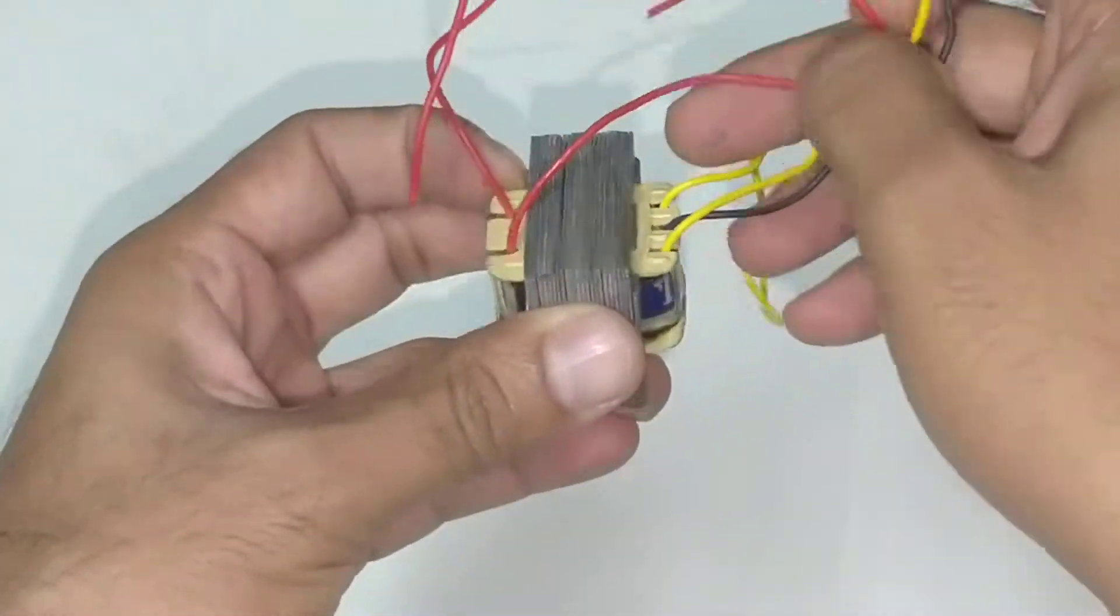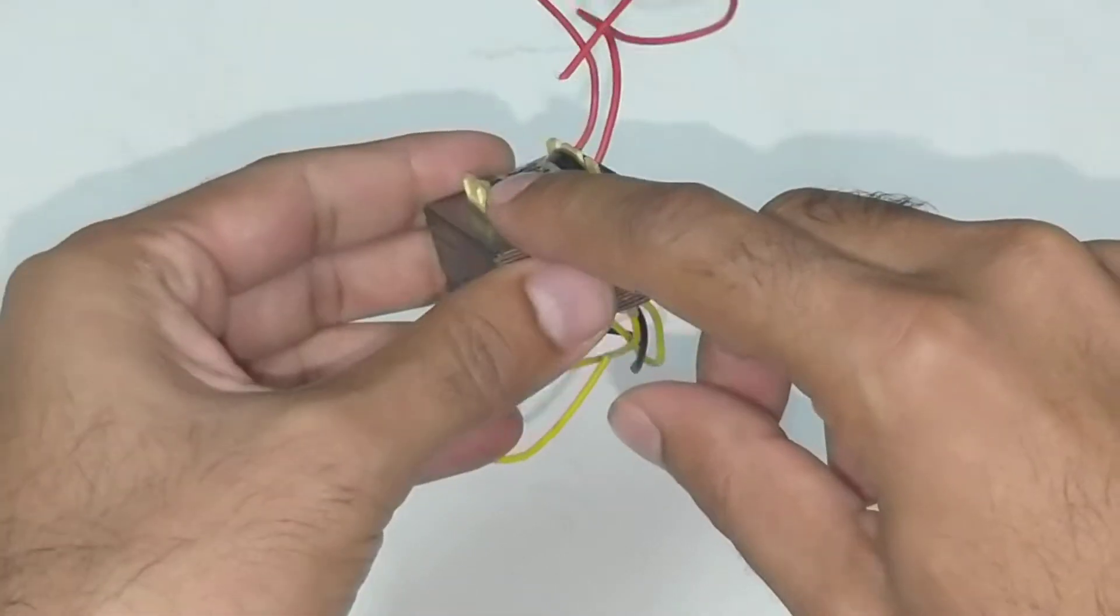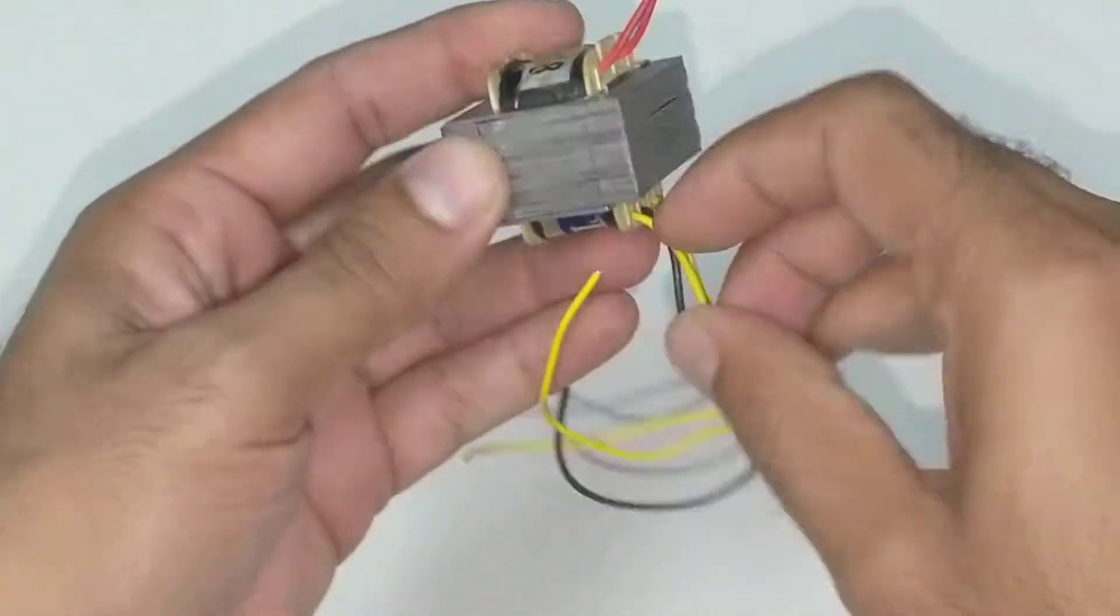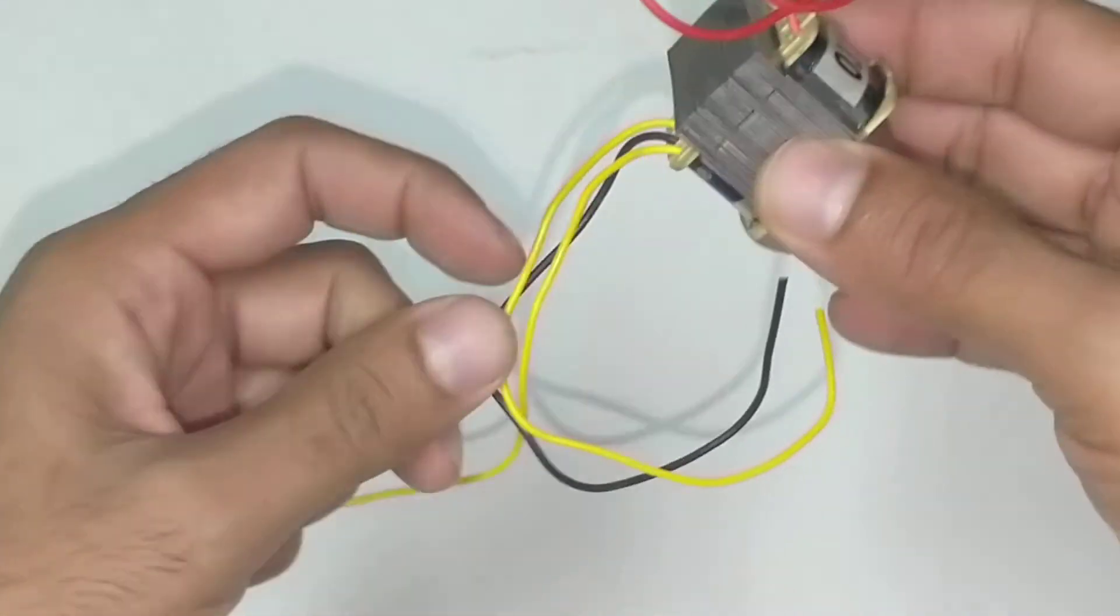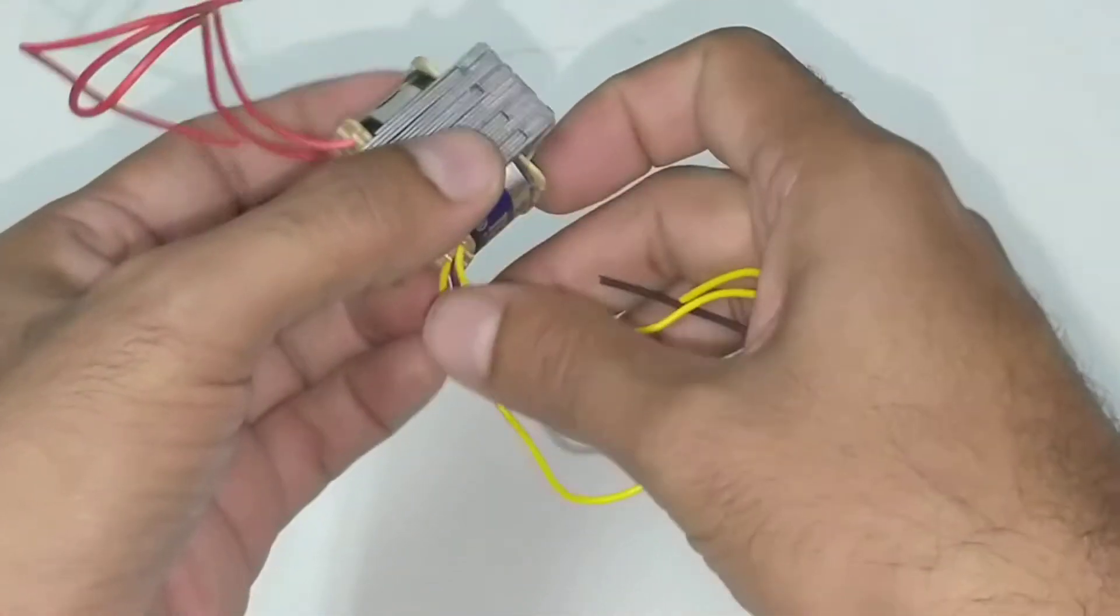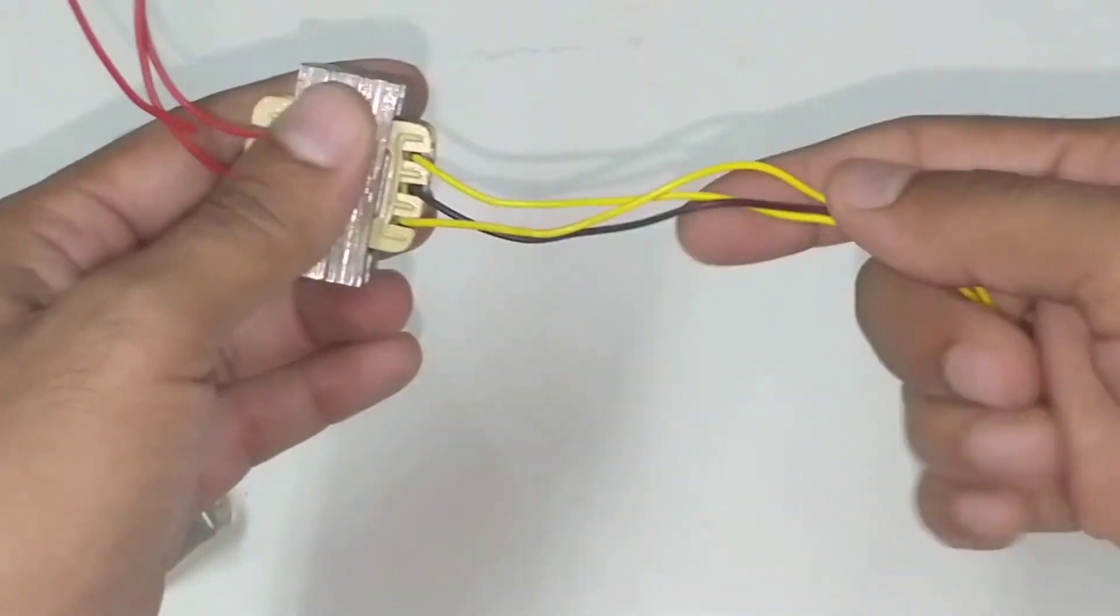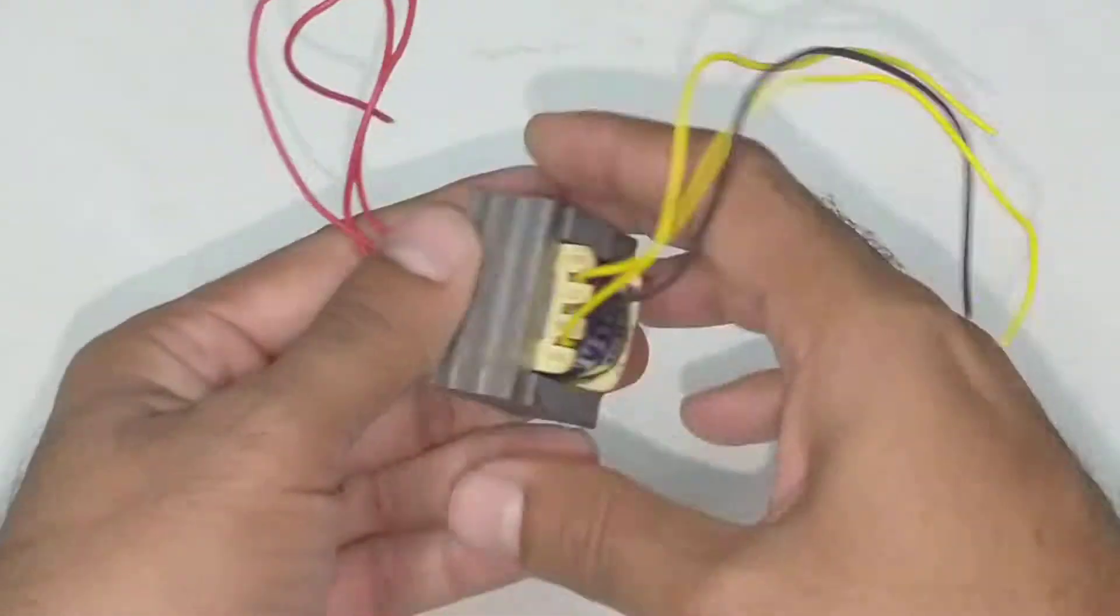The center part you see is called a bobbin. On this bobbin they wind copper wires - close to 13,000 turns for the primary and probably hundreds or 200 turns for the secondary. This gives the low voltage and this is where you give the high voltage.